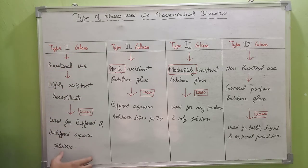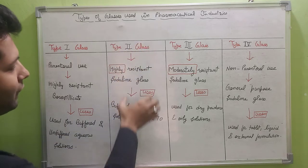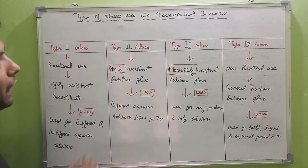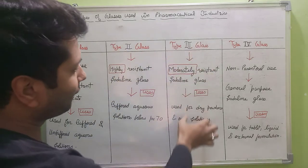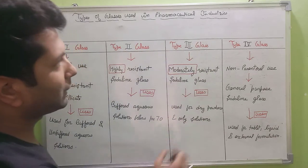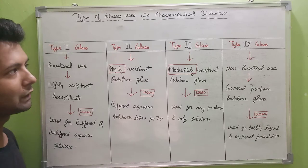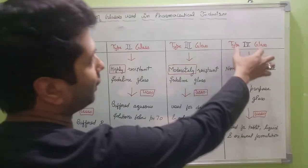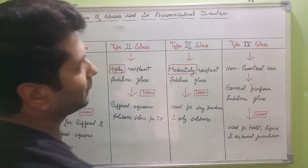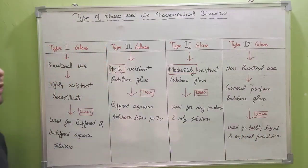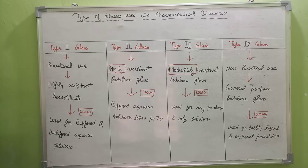This column will represent the Type 1 glass, this column will represent the Type 2 glass, this column will represent the Type 3 glass, and this column will represent the Type 4 glass. Let's get started one by one.